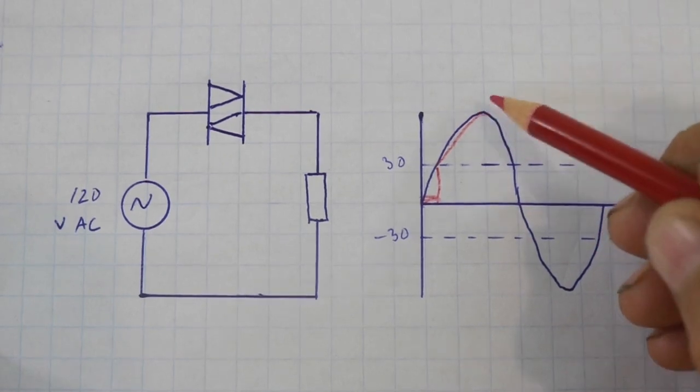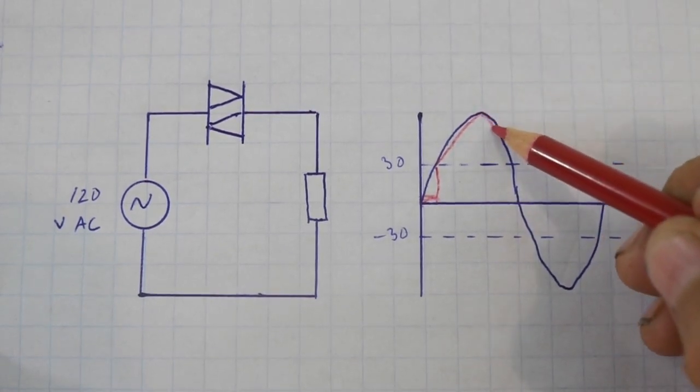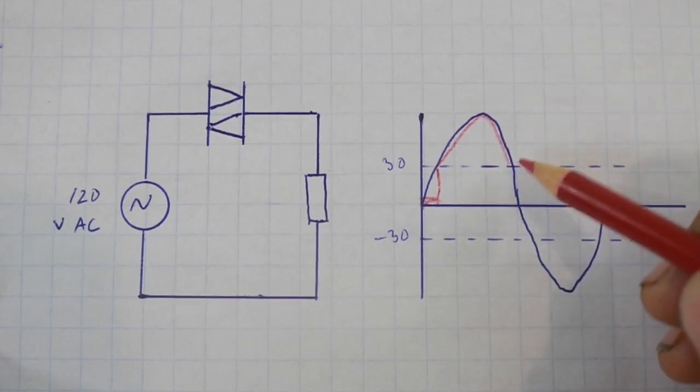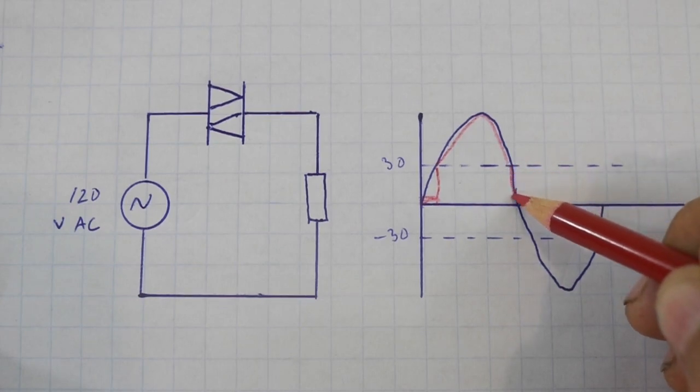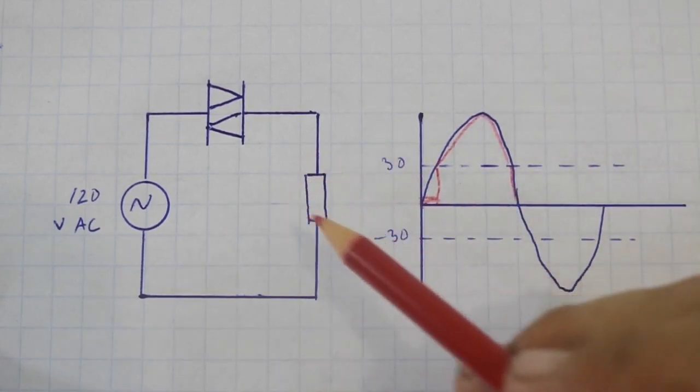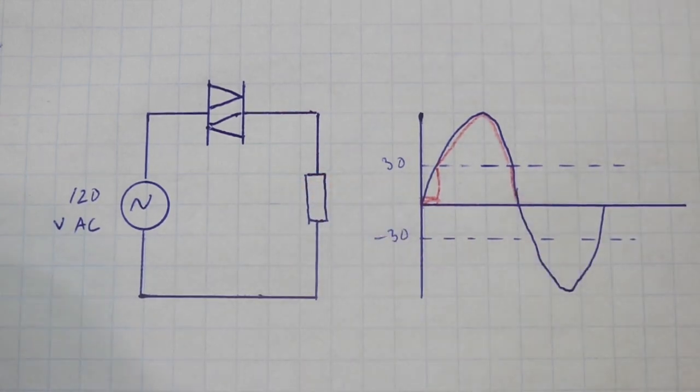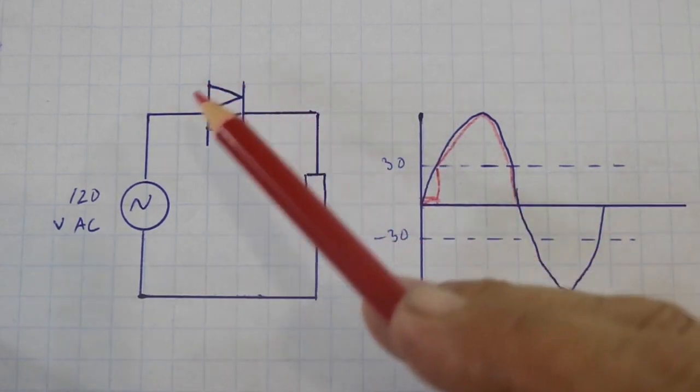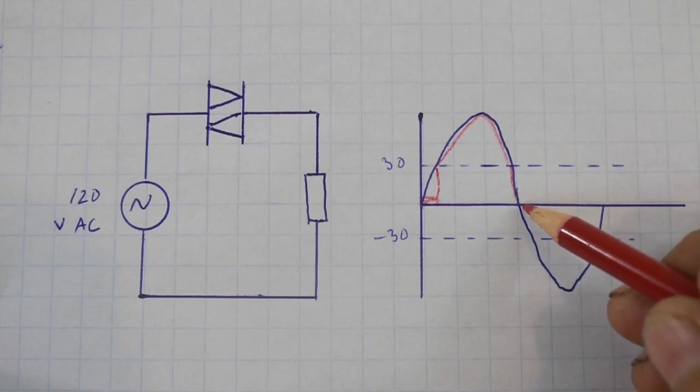Here we reach the maximum voltage and then we go again to the 30 volts level but it continues to conduct until the voltage is very small and therefore the current is also very small. When the current is a few milliamps then the DIAC opens and no current flows again.